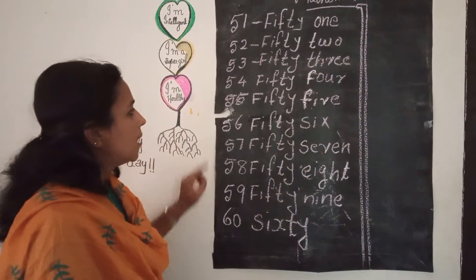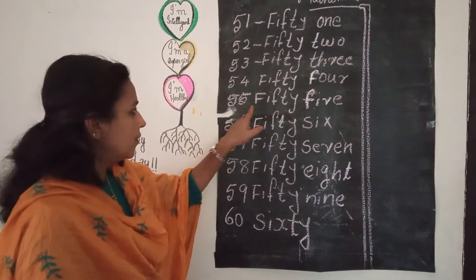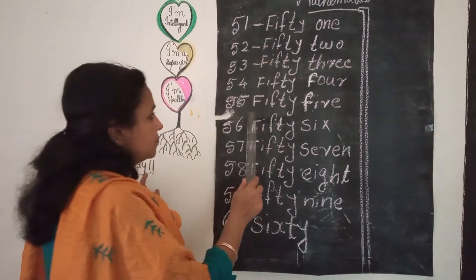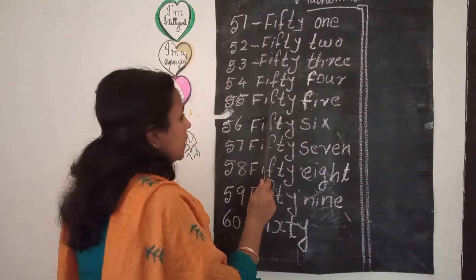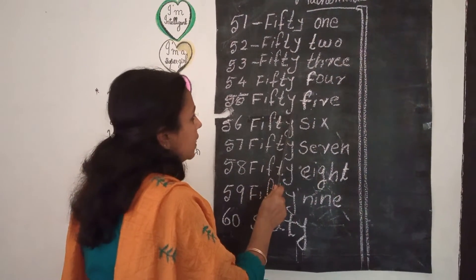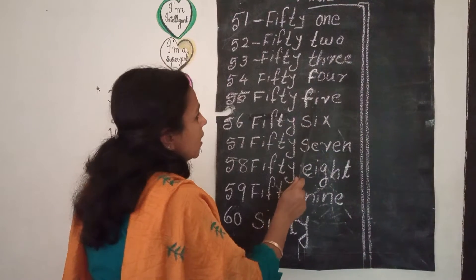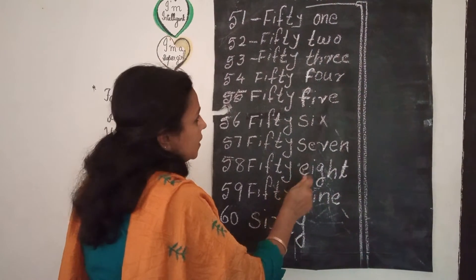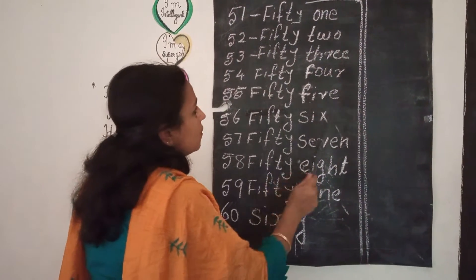55 — spelling: F, I, F, T, Y, F, I, V, E. Fifty-five.